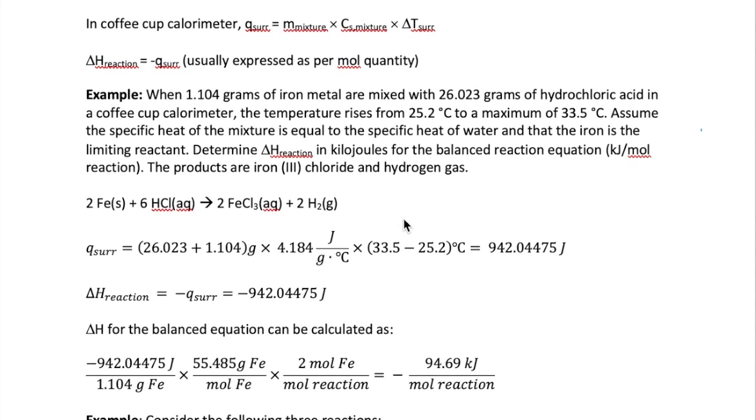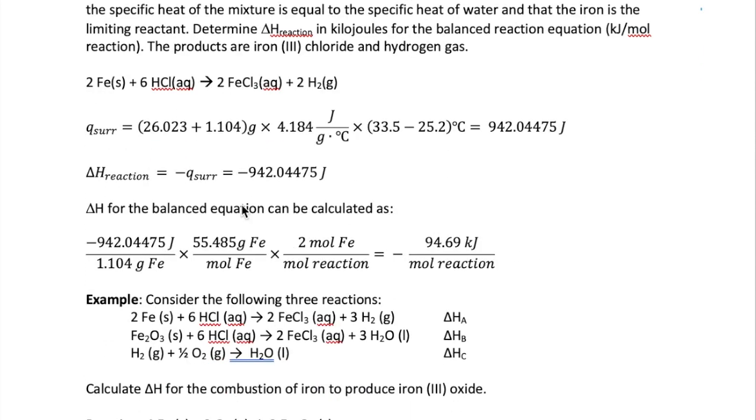Now to calculate the heat of the surroundings, we're going to add the mass of the metal and HCl. That gives us the total mass of the reaction mixture, and then multiply that by the specific heat, and then delta T, which is given here. And that all ends up giving us 942.04475 joules. As I said earlier, the actual value of the delta H will be the negative of the Q of the surroundings, so it will be negative 942.04475 joules.